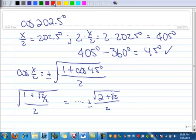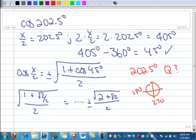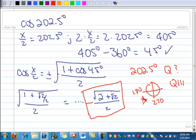Alright, so let's analyze the plus or minus. So 202.5 degrees is in quadrant what? Well, here's 180, here's 270, so it's quadrant 3, and cosines are negative in quadrant 3, so this problem then is negative. So this is the exact value of the cosine of 202.5 degrees.